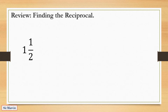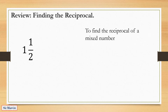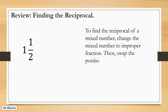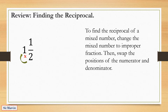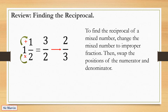For 1 and 1 half, how do we find the reciprocal of a mixed number? To find the reciprocal of a mixed number, change it to an improper fraction first, then swap the numerator and denominator. So 2 times 1 plus 1 equals 3, giving us 3 over 2 — but we still interchange, so the reciprocal is 2 over 3.